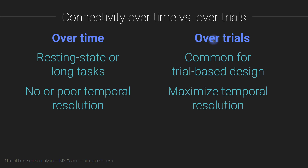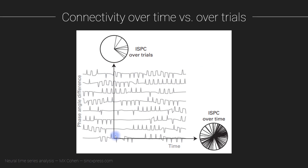The over-trials method — synchronization over trials — is the most commonly used synchronization method when you have repetitions of a particular stimulus and dozens or hundreds of trials. This also maximizes temporal resolution, because with connectivity over trials you have a different connectivity value for each individual time point. The temporal precision of connectivity over trials is really just determined by the smoothing of the wavelets that you apply — how much smoothing is intrinsic to the time-frequency analysis.